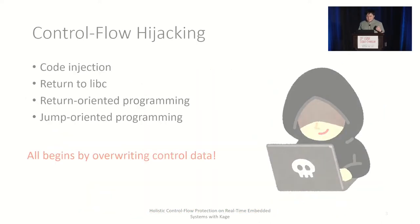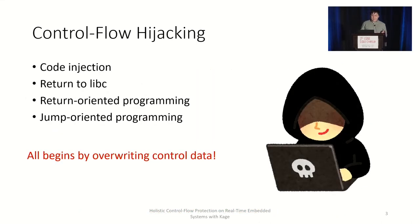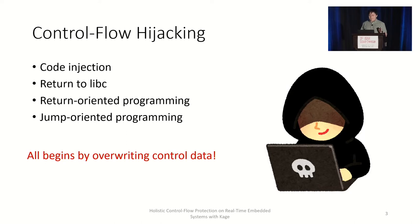Control flow hijacking is a broad category of attacks, including code injection, return-to-libc, return-oriented programming, and jump-oriented programming. All of them share the same commonality: they all begin by taking advantage of a buffer overflow and overwrite control data, such as return addresses or function pointers.